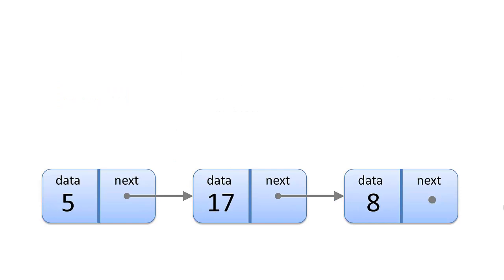Here we have a simple linked list that consists of three nodes with data 5, 17, and 8. Each node has a next node, except for the very last node, which doesn't have a next node. In Python, we're going to store a None pointer in the next field, and that tells us there is no next node — in other words, that's the last node in the list.